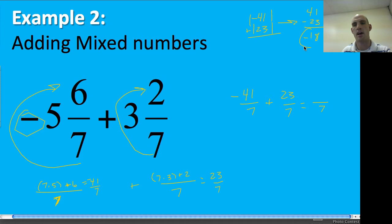I'm going to subtract the easy way and so that gives me 18 and I'm going to keep the sign of the larger absolute value which is negative. So I have negative 18 over 7. I can convert it back then.